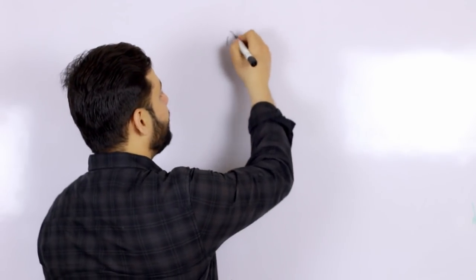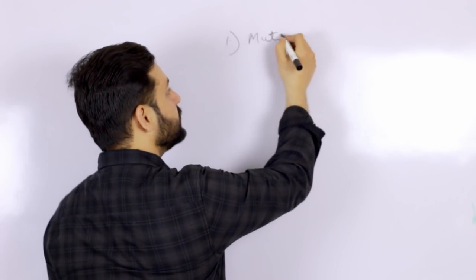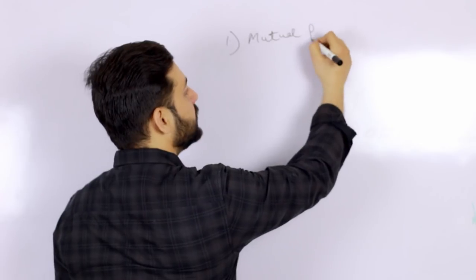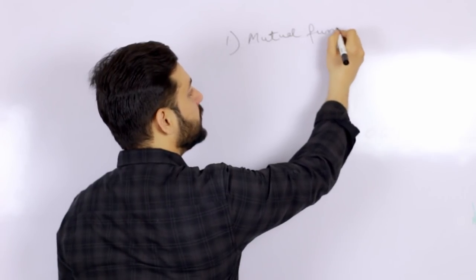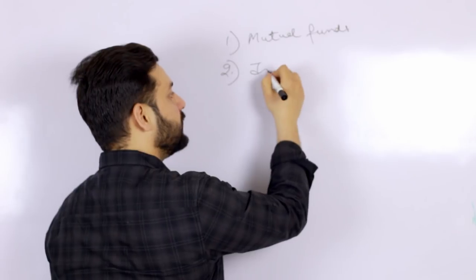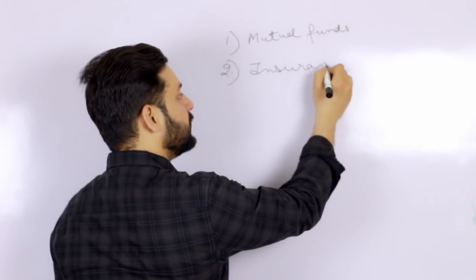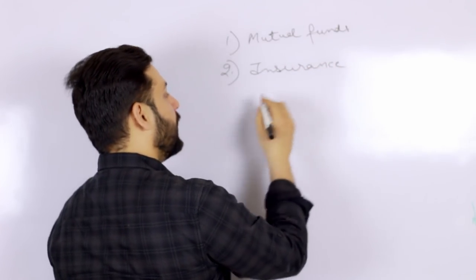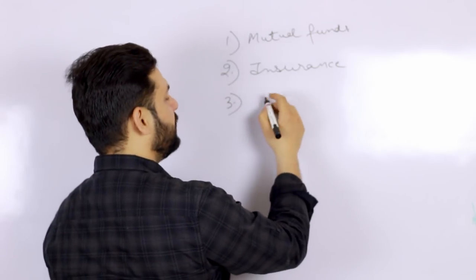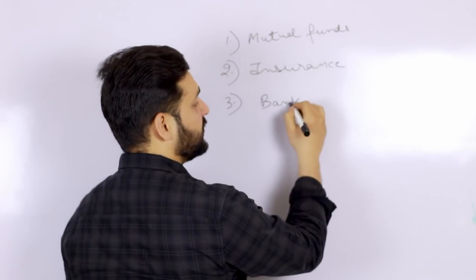The three main areas to prepare are: first, mutual funds; second, insurance; and third, banking or current affairs. These are the three types of questions that the interviewer can ask you.